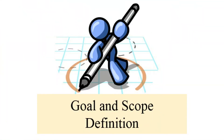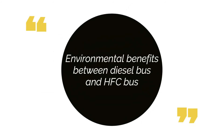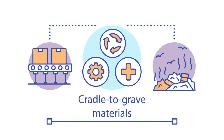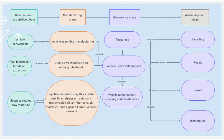Firstly, LCA goal and scope definition discusses the environmental benefits between diesel bus and HFC bus. This involves the life cycle boundary from cradle to grave, divided into four phases: raw material acquisition, manufacturing stage, bus service stage, and waste disposal stage.